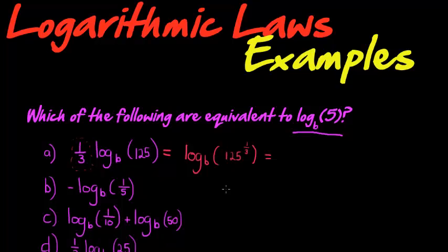This is the third root of 125. The third root of 125 is 5, so log base b of the cube root of 125 is 5. So we see this one is equivalent. Okay, so let's just circle them. This one is.